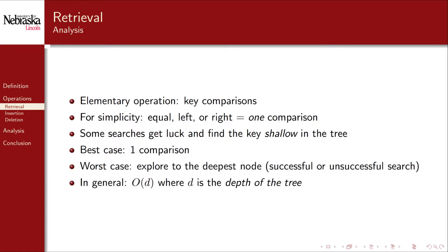Now for our analysis. The elementary operation is the key comparison. In our code we compare for equality and then inequality to traverse left or right; however, it's generally better to analyze with respect to a single comparison, since in practice we would use a comparator returning 0, a negative, or a positive value. As we saw with the examples, complexity for a search depends on the structure of the tree. In the best case, a single comparison suffices if the node is at the root. In general, the worst and average case require exploring to the deepest parts of the tree — order D where D is the depth.